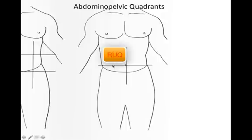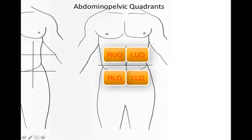Here we have the right upper quadrant and the right lower quadrant. Over here the left upper quadrant and the left lower quadrant. It's as simple as that.